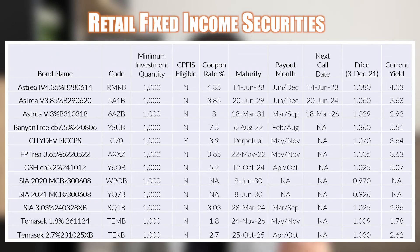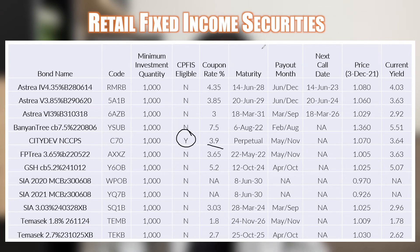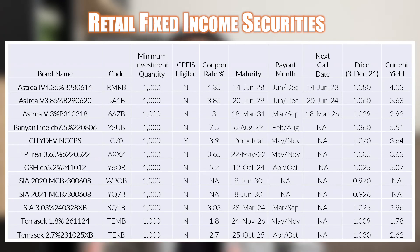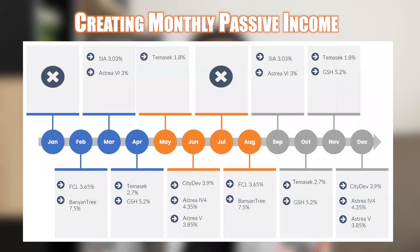Here is a summary of all retail fixed income securities currently trading on SGX. From this summary, you can see there is only one that is CPF OA approved — the City Development perpetual securities, which has a coupon rate of 3.9%. The rest are not CPF OA approved.